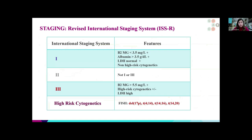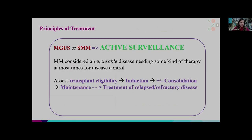As with all cancers, there is a staging system for myeloma. This staging system considers blood tests including beta-2 microglobulin, albumin, LDH, and also cytogenetics — the way we look at chromosomes when we do a bone marrow biopsy. Together, these characteristics give us an idea whether a patient is at stage one (low risk), stage two, or stage three. Again, these are clinical parameters we look at in clinic to identify patients at risk, and not something patients need to focus on completely.